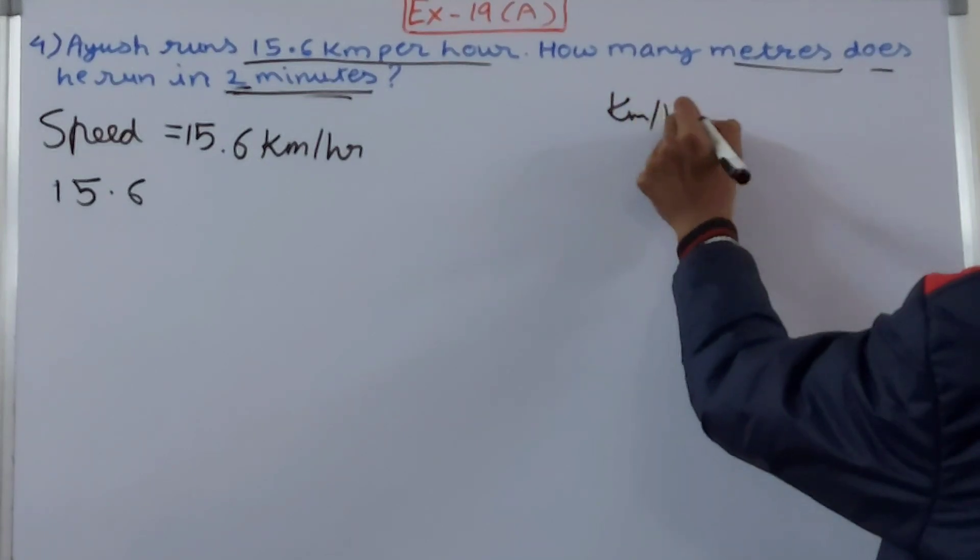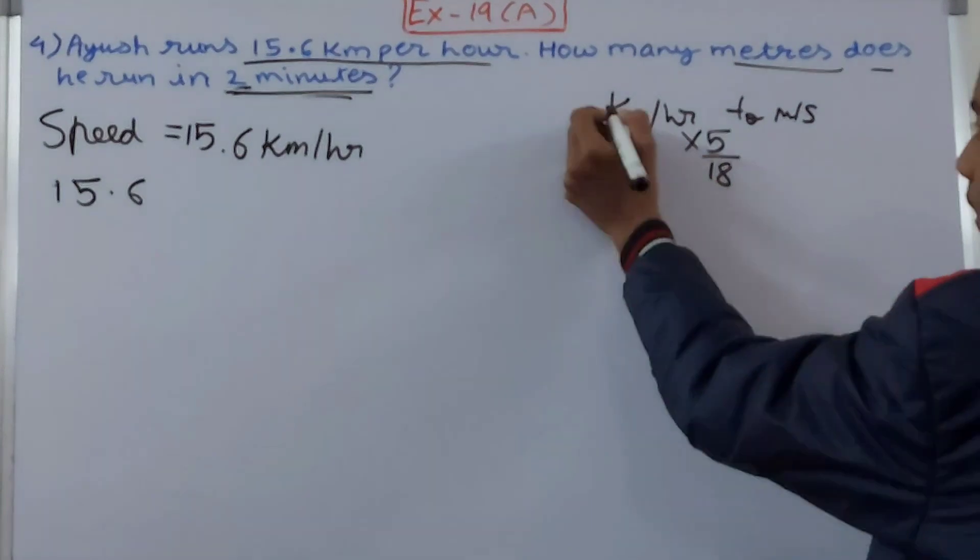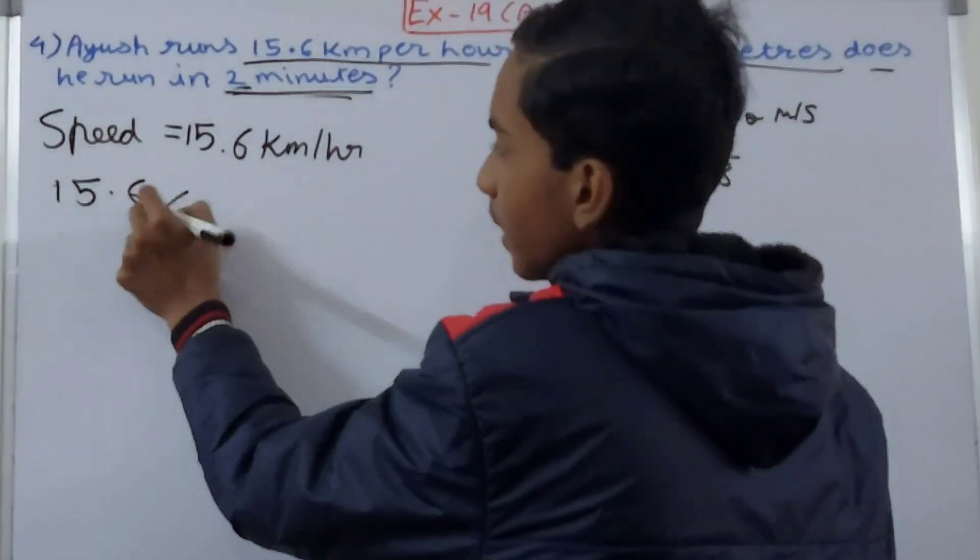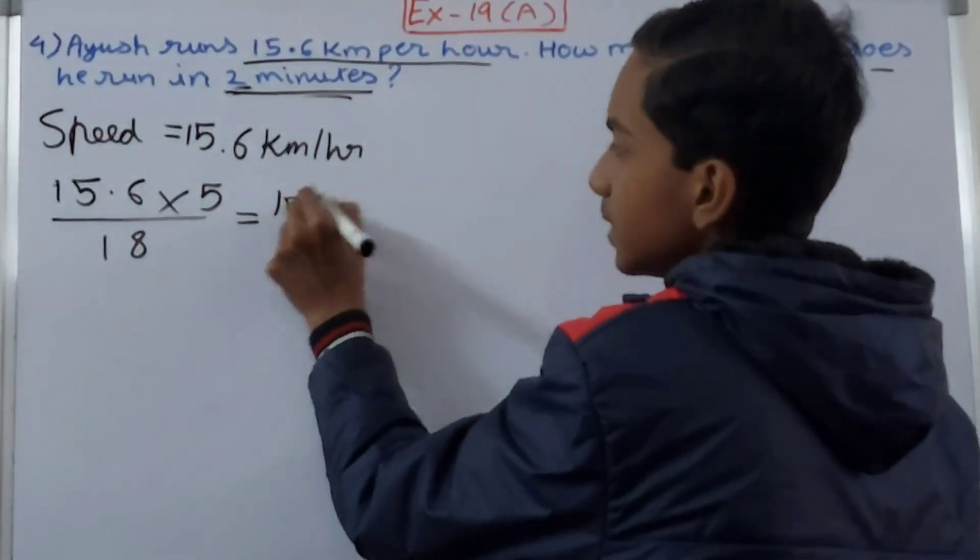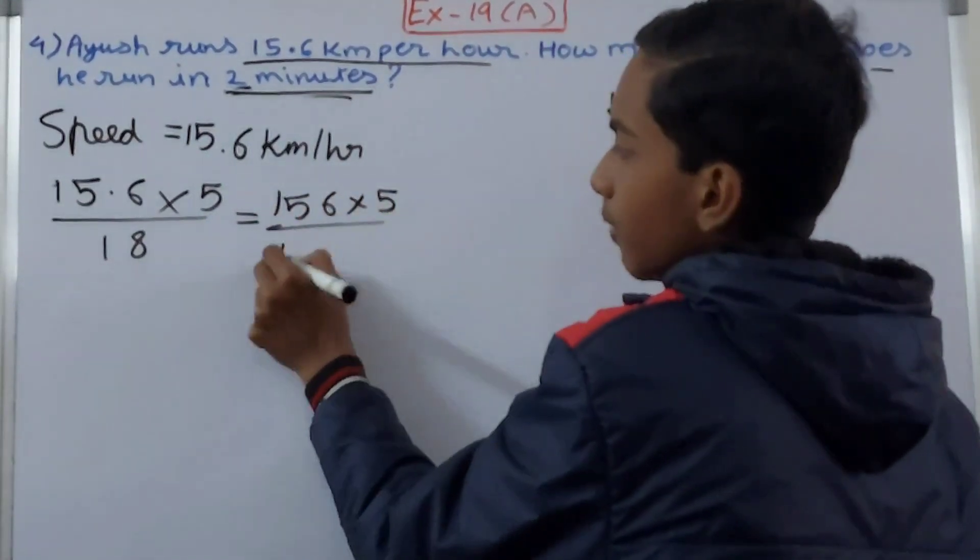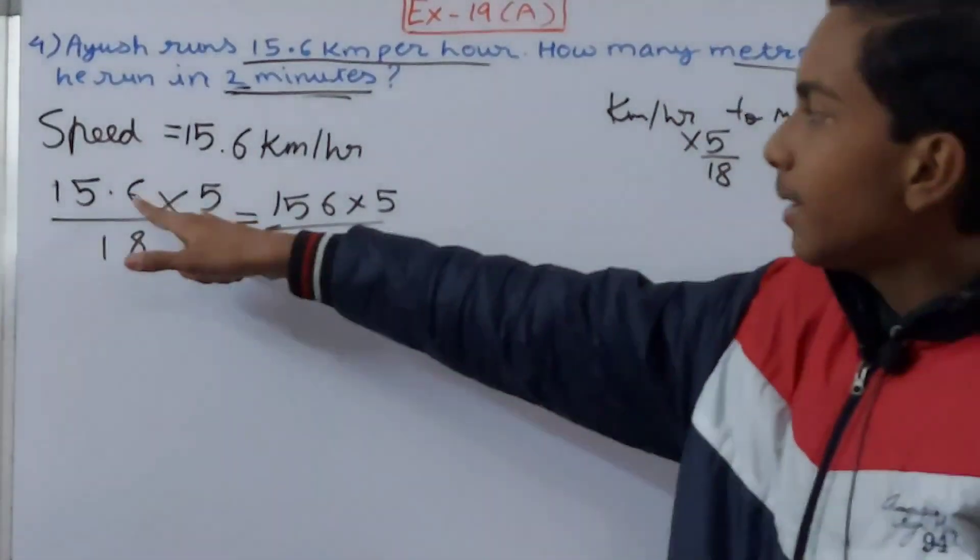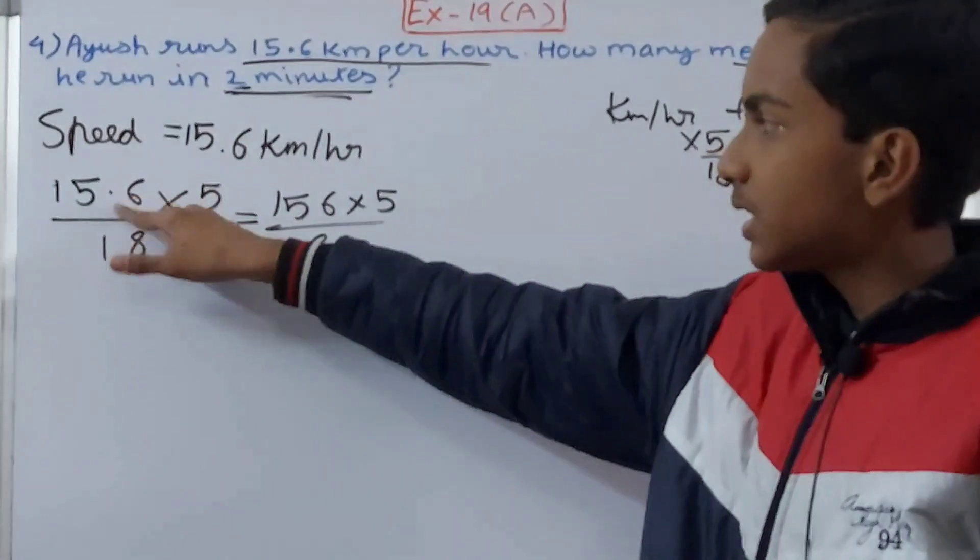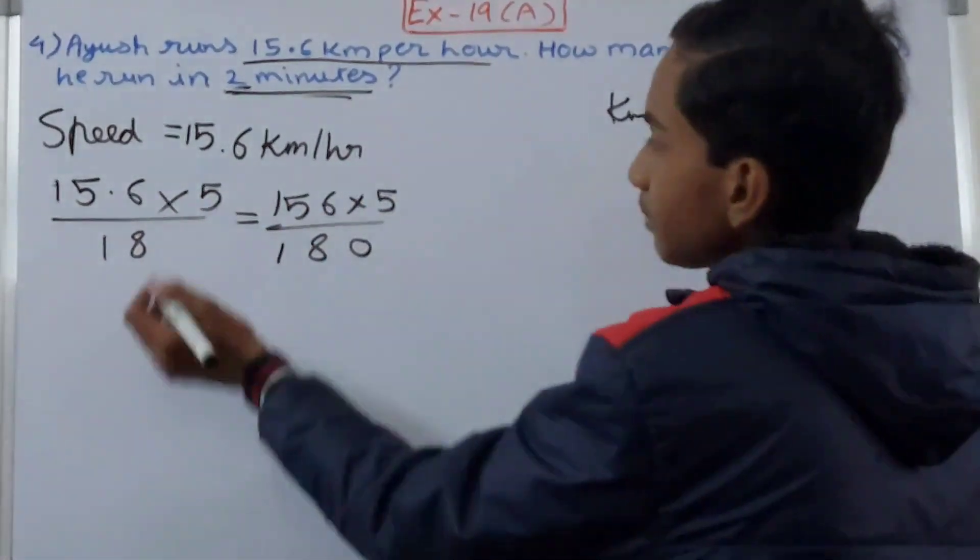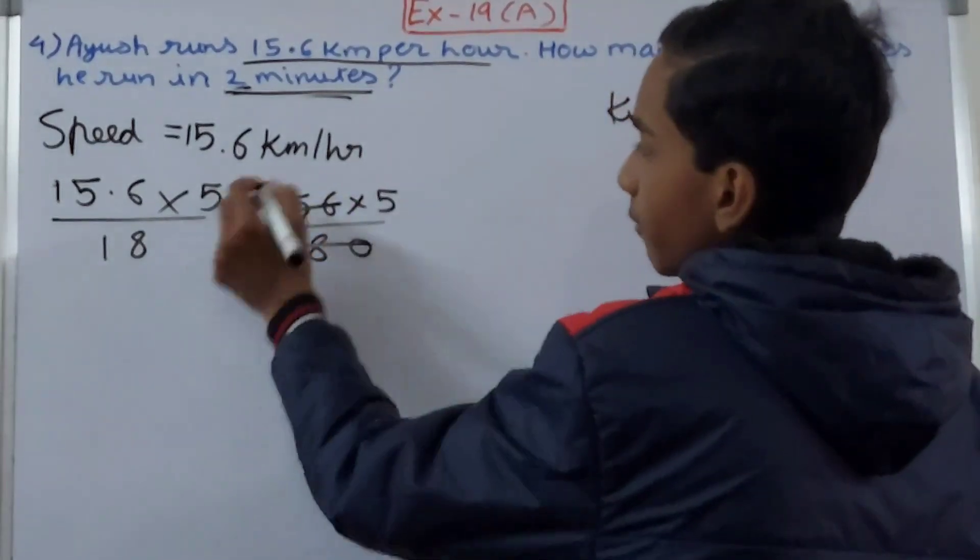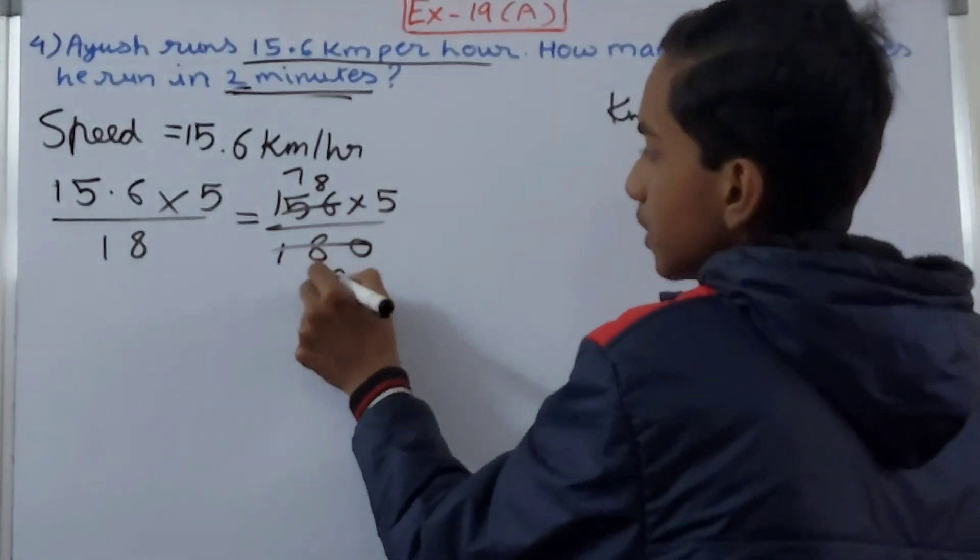So first of all, 15.6 kilometers will be converted into meter per second. So we are going from kilometer per hour to meter per second. What we do: multiply by 5 by 18. So 5 upon 18. Now solve it up, so this will be 156 into 5 upon 18, and 10 will increase because I have removed the decimal point—one place the decimal point was here, so 10 will be increased here. Now you see, cancel this. Let's cancel it by 2: 7, and 178, and this will be 90.